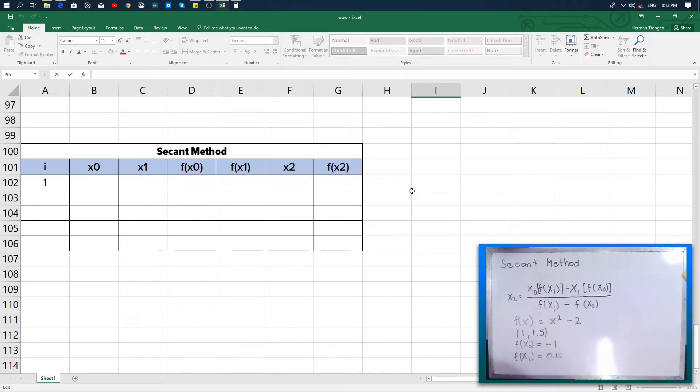And so we are going to satisfy the blank rows of the table. So x₀ is where we have that value already, 1, 1.5. Then we already have these values of f(x₀), -1 and then 0.25. We're going to find the value of x₂ by using this formula.